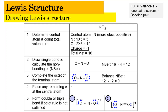Now we determine the most stable structure for NO2 plus. For structure number one: oxygen A and oxygen B are identical — 6 valence electrons, 4 lone pair electrons, 2 bonding pairs, giving zero each. For nitrogen: 5 valence electrons, 0 lone pairs, 4 bonding pairs, giving plus one. So the charges are zero, plus one, zero, and the sum equals plus one, consistent with the plus one charge of the polyatomic ion.